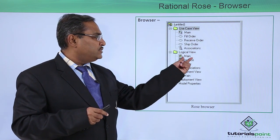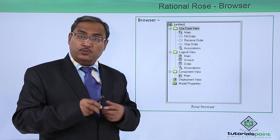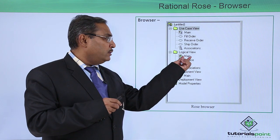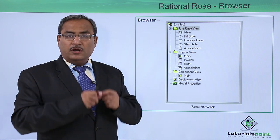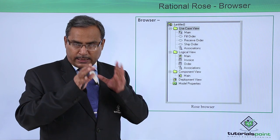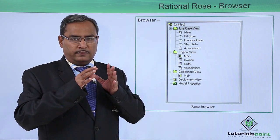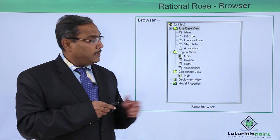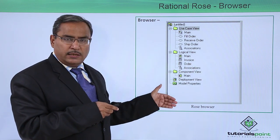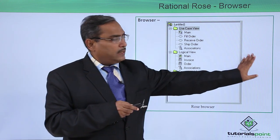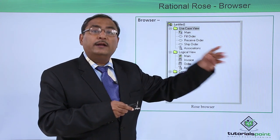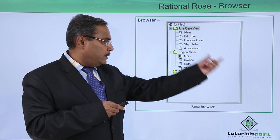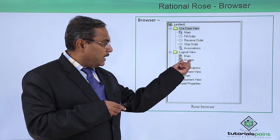This is the logical view. Under this one, we are having this main. Under this logical view, we are going to draw our class diagrams. If you click on the main, the respective window will pop up and in that particular window you can draw the respective class diagrams. These are the different classes, whatever you have drawn in the respective diagram — for example, an invoice class or an order class — they are getting reflected here.